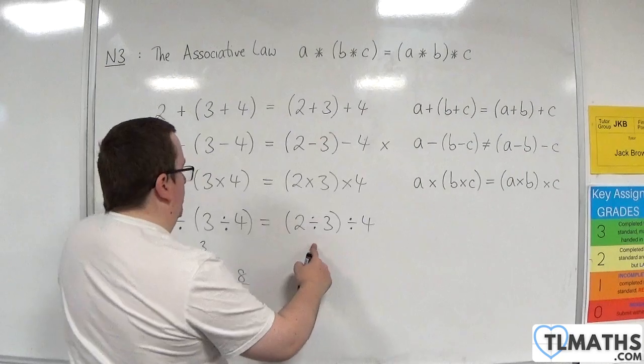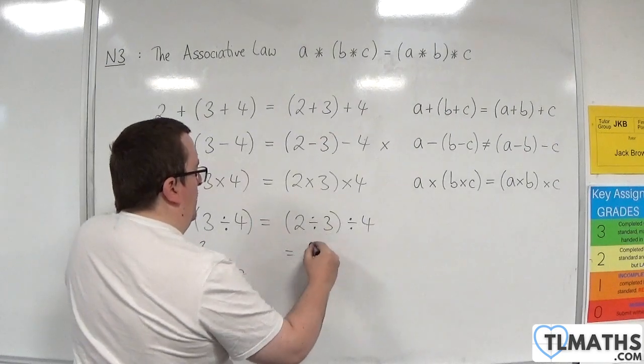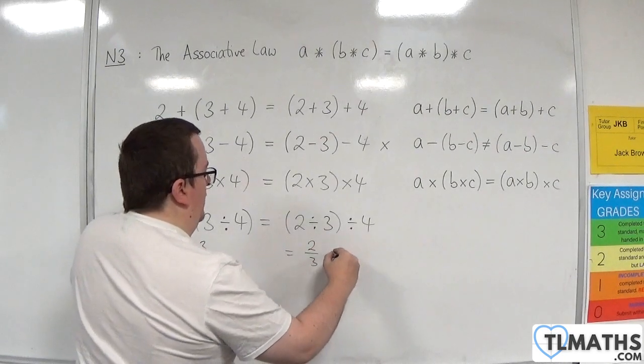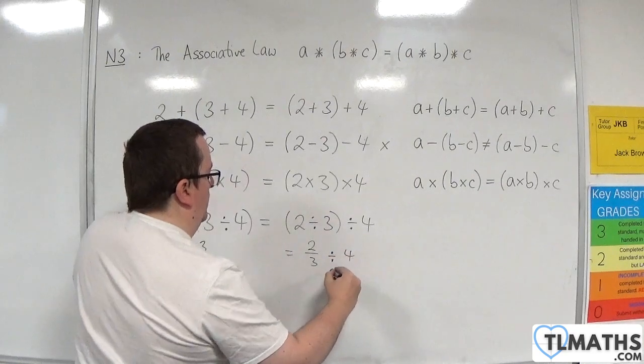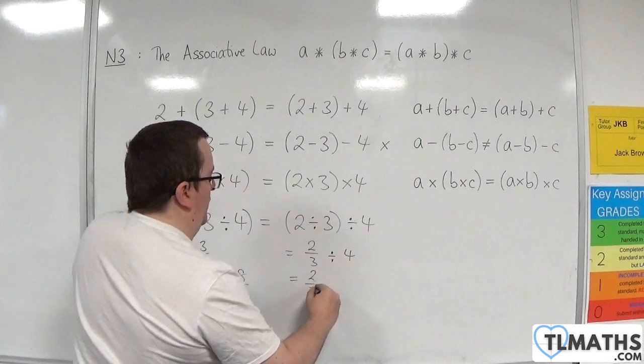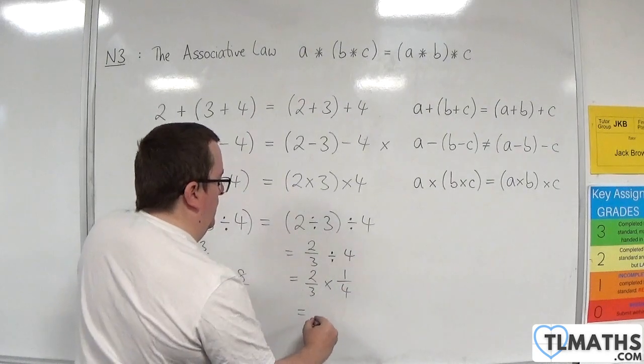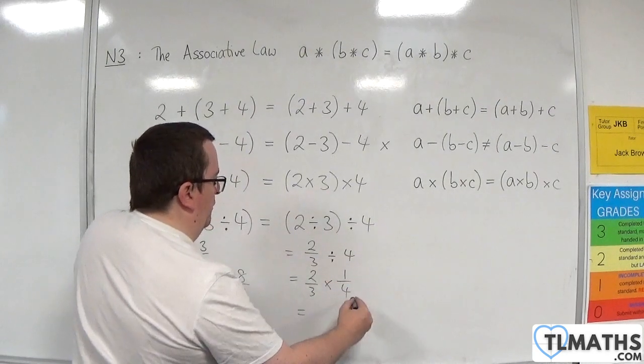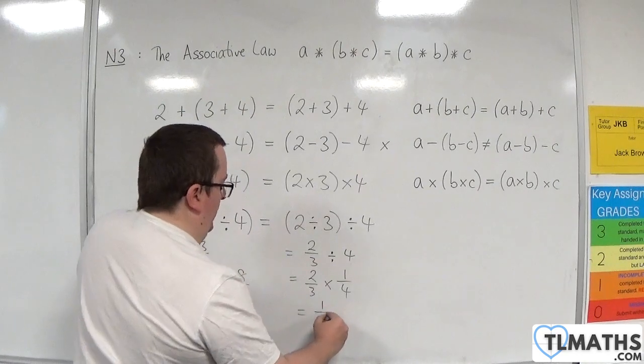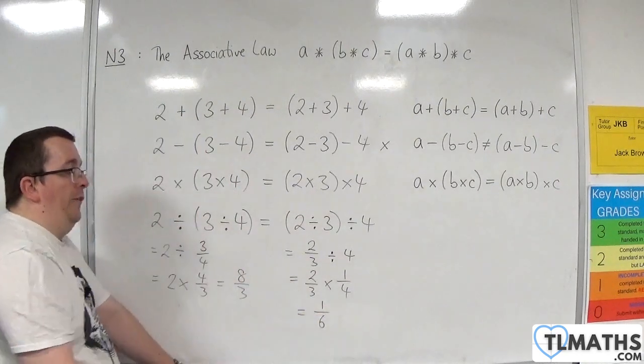While over here, we've got 2 divided by 3, which is 2 thirds. And then I'm dividing it by 4. Which is the same as 2 thirds times 1 quarter, which is 2 over 12, which is 1 over 6. And 8 thirds and 1 sixth are not the same.